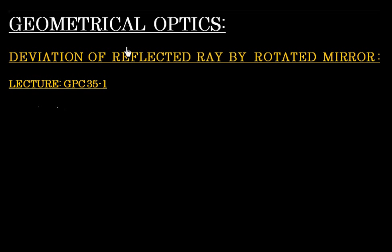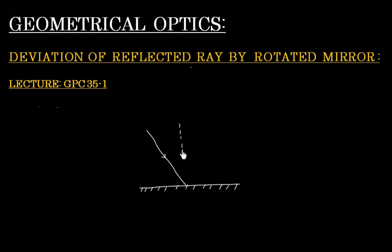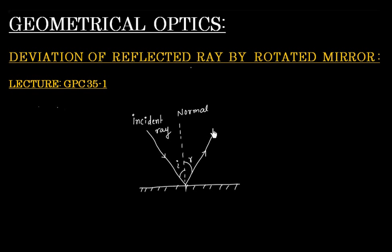In this lecture, we will discuss the deviation of a reflected ray by a rotated mirror. Let us say we have a plane mirror and a light ray is incident on this plane mirror. The incident ray makes an angle I. This ray gets reflected and makes an angle R with the normal. This is the normal, this is the incident ray, and this one is the reflected ray.